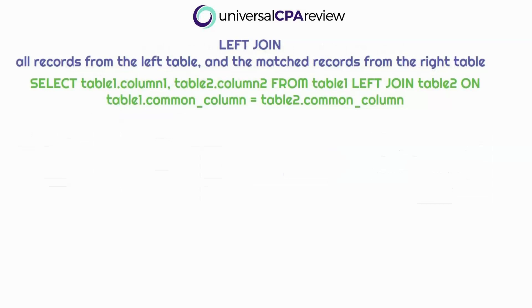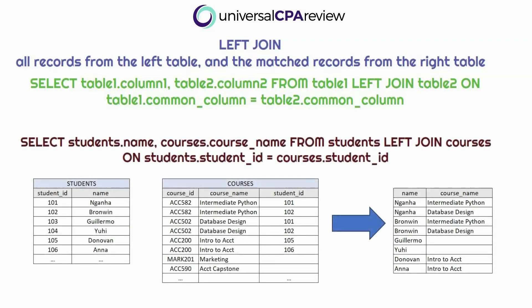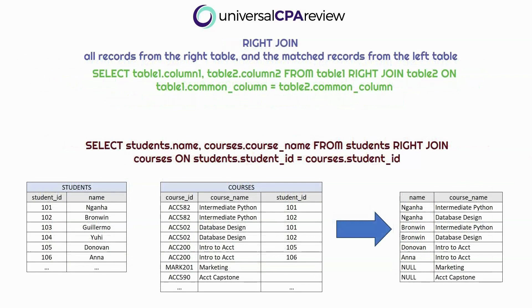A LEFT JOIN returns all records from the left table and the matched records from the right table. If no match is found, the result is null on the right side. Using the same students and courses tables, if we want all students including those not enrolled in any course, we use a LEFT JOIN, as shown with the results. Similarly, a RIGHT JOIN — also known as a right outer join — returns all records from the right table and matched records from the left table. If no match is found, the result is null on the left side.